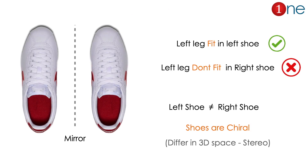First, let us see what is chirality. We can understand it by shoes. Everybody knows a pair of shoes. We may wonder why the left shoe only fits on the left leg, not on the right leg. The reason is the left shoe is not equal to the right shoe — it is spatially different, or stereochemically different. That is called chirality, so shoes are chiral.